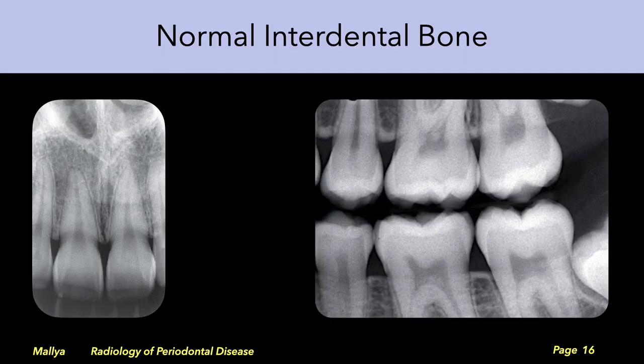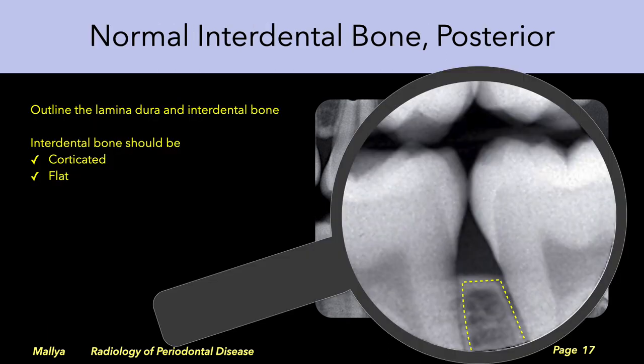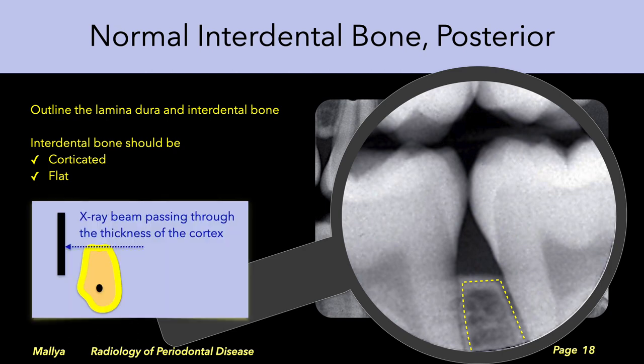Now let's examine the radiological appearance of interdental bone on periapical and bitewing radiographs, focusing on the posterior region and in particular the interdental bone between the mandibular molars. Outline the lamina dura adjacent to the teeth and continue on to the interdental bone. The interdental bone should be corticated and flat. Note that in order to appear adequately radiopaque, the x-ray beam should traverse through a sufficient thickness of the cortex of the interdental bone.